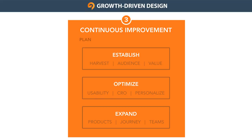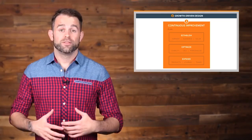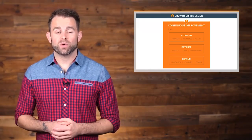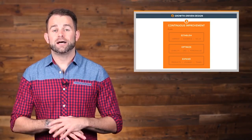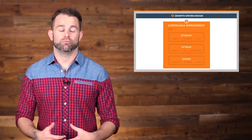The third focus area in Expand is using the website to help other teams achieve their goals and grow the business. This could be building items on the website to help the sales team prospect, qualify, and close deals. It could be helping the HR team recruit more qualified candidates and retain current employees, or helping the customer service team reduce support tickets and inbound calls and retain your existing customers.